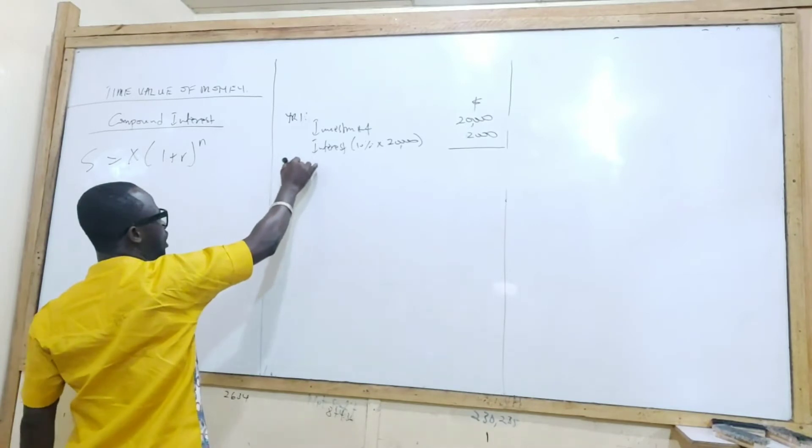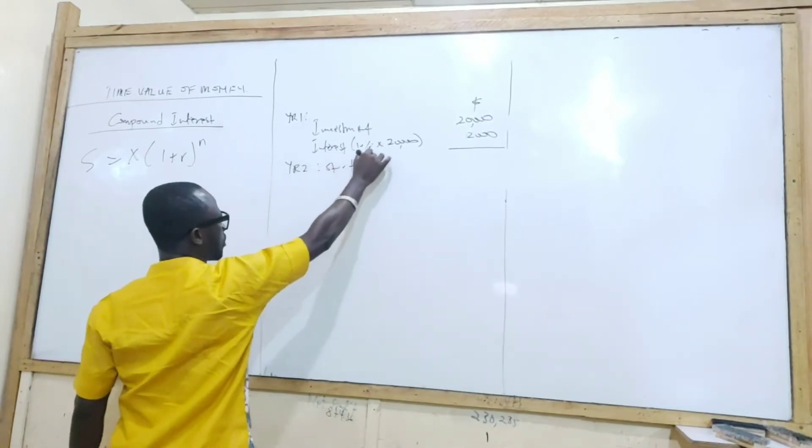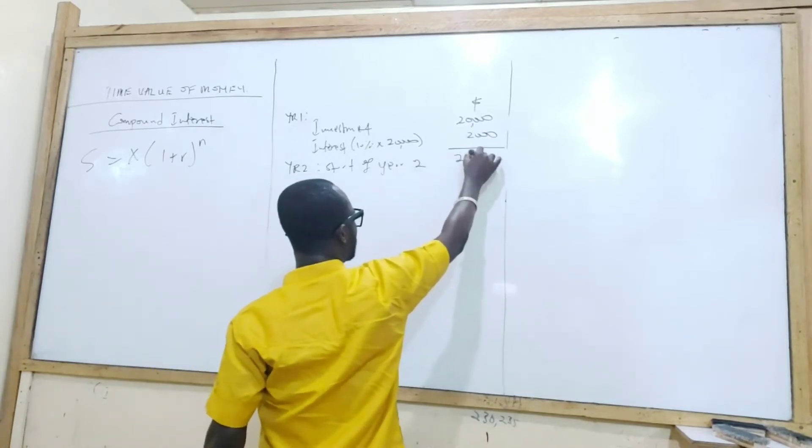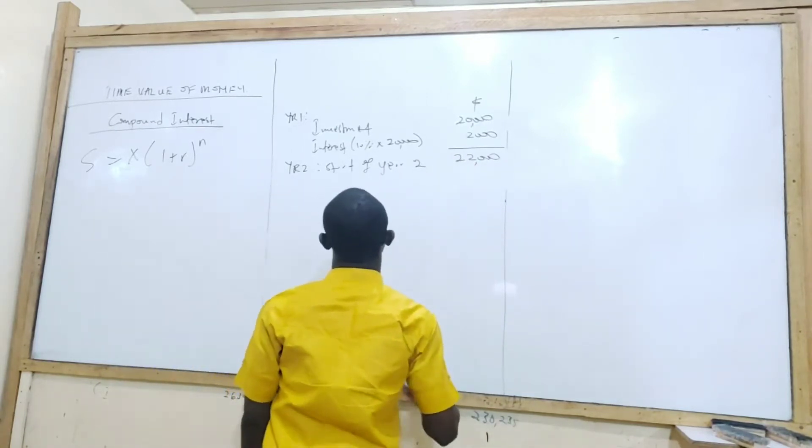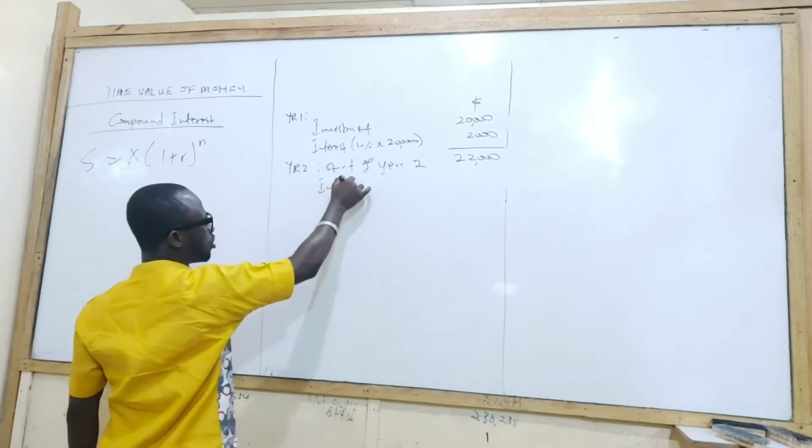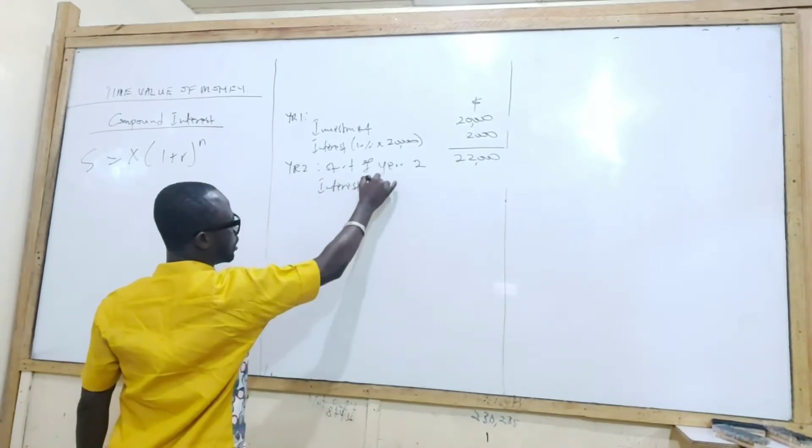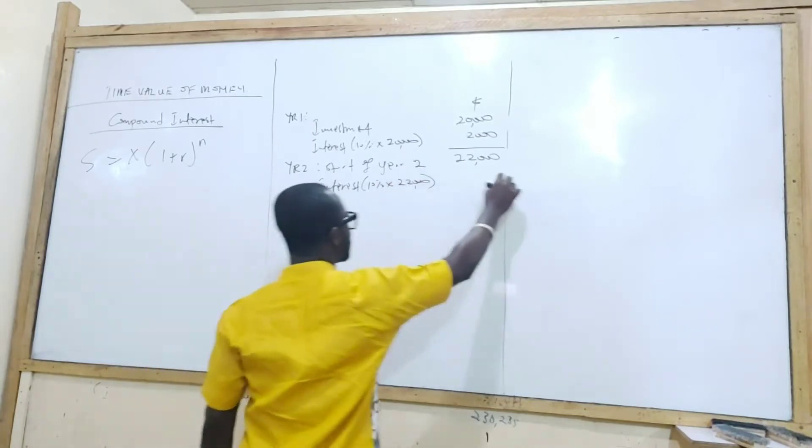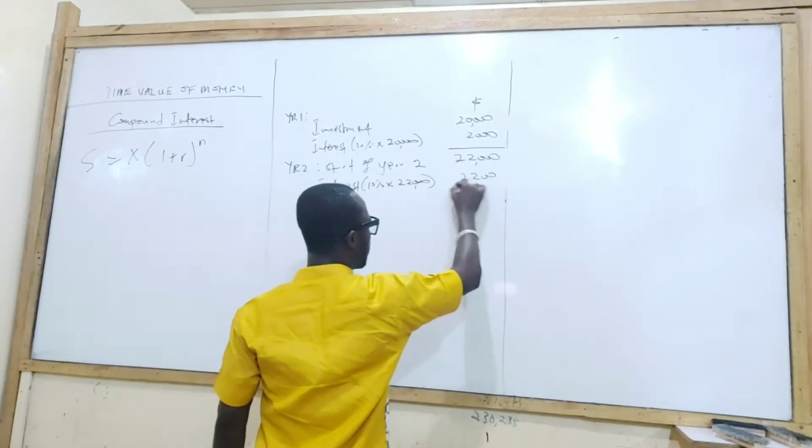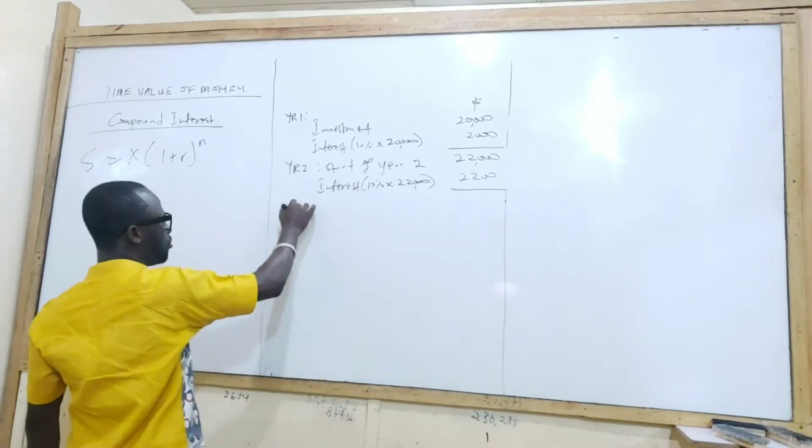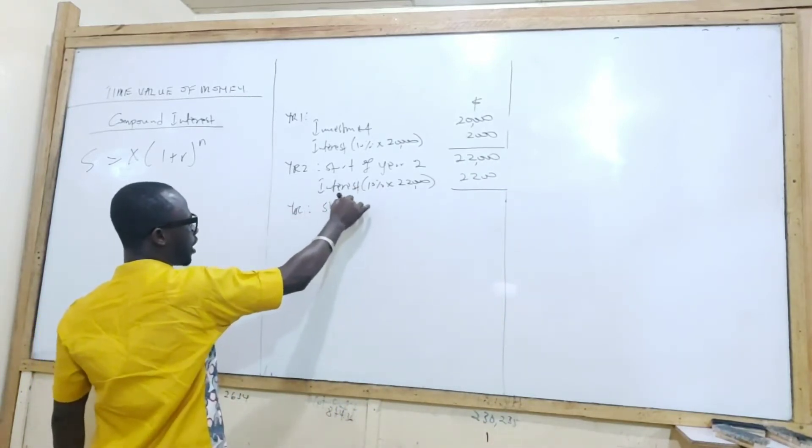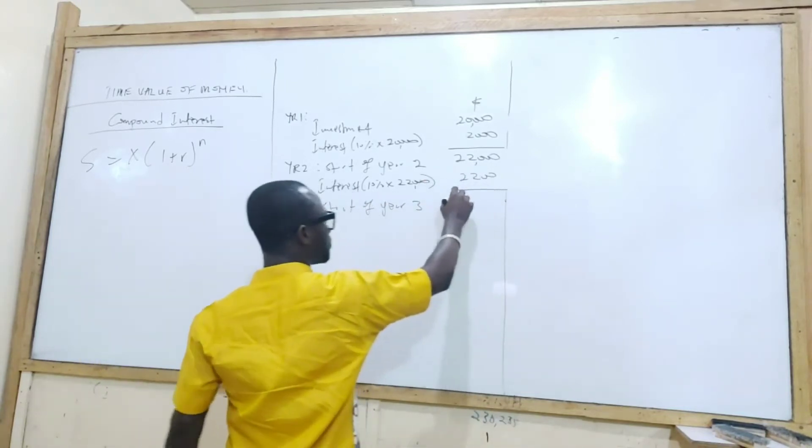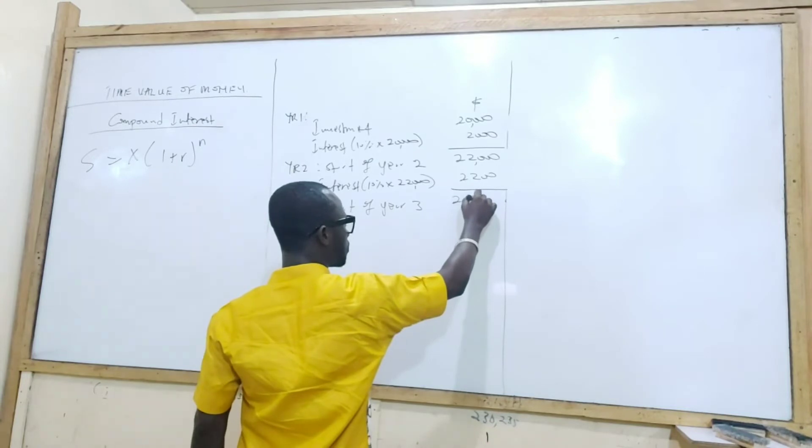So what do we have? So at the start of year two, the money will be $22,000. So for year two, interest will be charged on that amount. 10% of $22,000. What you got? $2,200. You add it up. That will be year three, start of year three.